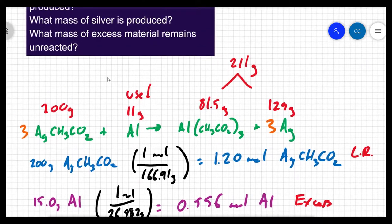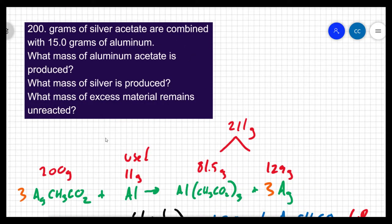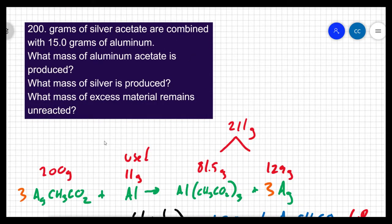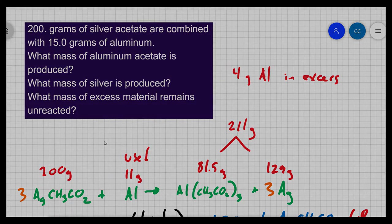Well, I used 11 grams, but I started with 15 grams of aluminum. So that tells me that 4 grams of aluminum will be left in excess. The difference between what I started with and what I actually consumed.